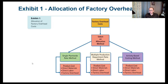Looking at this exhibit, you can see the allocation of factory overhead cost using the three different methods: the single plant-wide rate method, the multiple production department rate method, and the ABC method. Whatever the method is, we still have direct material, direct labor, and factory overhead. The method we're using only impacts the factory overhead calculation — the total factory overhead may be the same for the entire factory, but for each product it will be different.